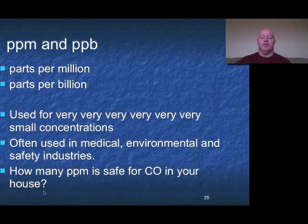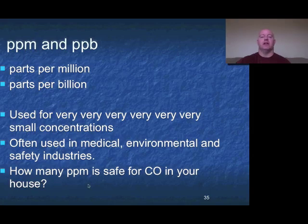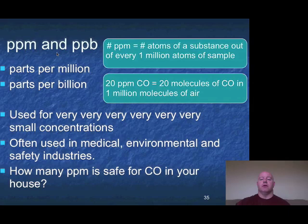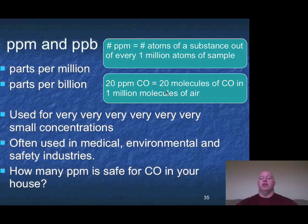If you want, take a minute and look up the PPM for carbon monoxide — one of the most common uses is for gases in our environment. Carbon monoxide in our house isn't safe, which is why we have carbon monoxide detectors. Look up what the safe level for carbon monoxide in your home is with a quick Google search. Your PPM number equals the number of atoms of a substance out of every million atoms. For example, if you had 20 parts per million of carbon monoxide, that would be 20 molecules of carbon monoxide per 1 million molecules of air — though 20 is just an example, not the answer to the safety question.